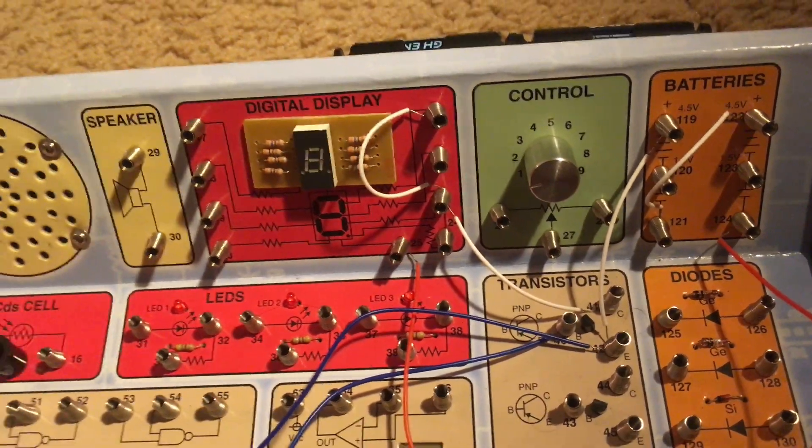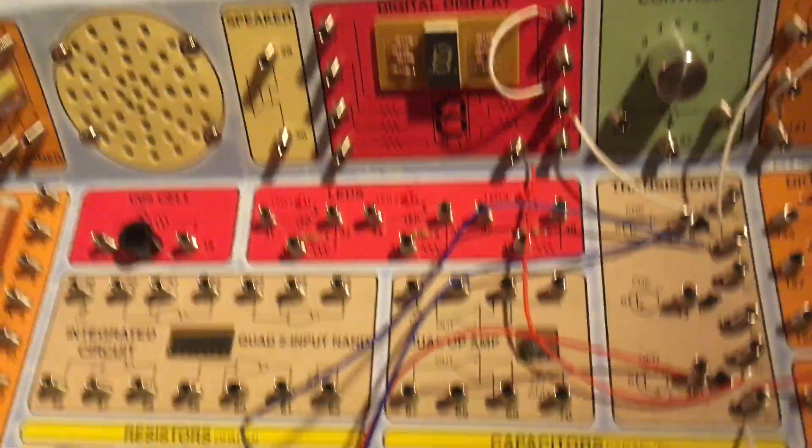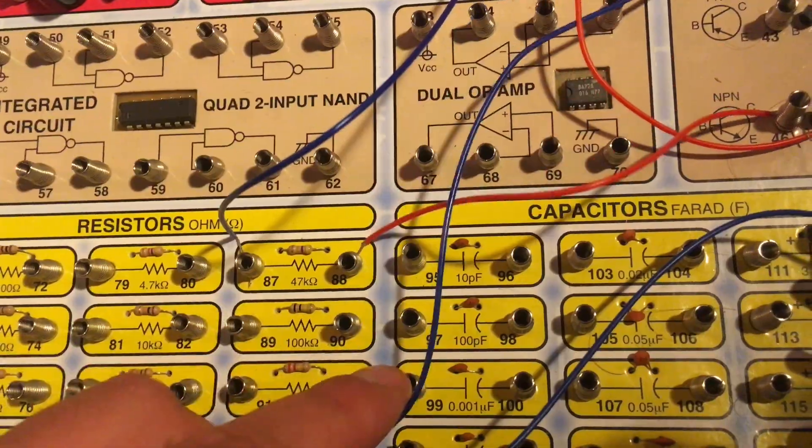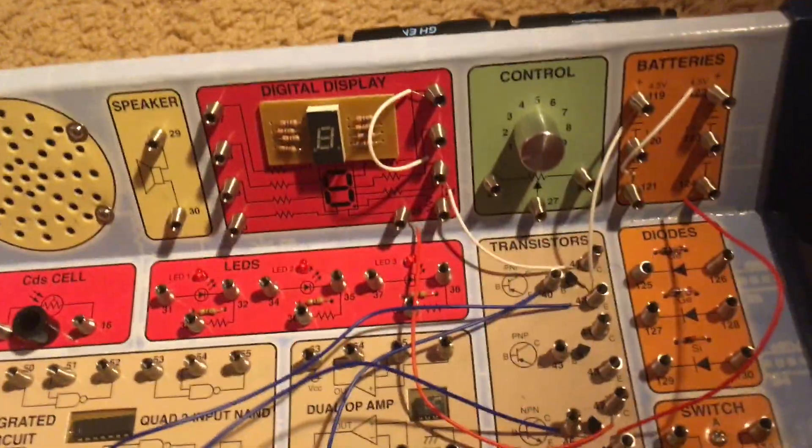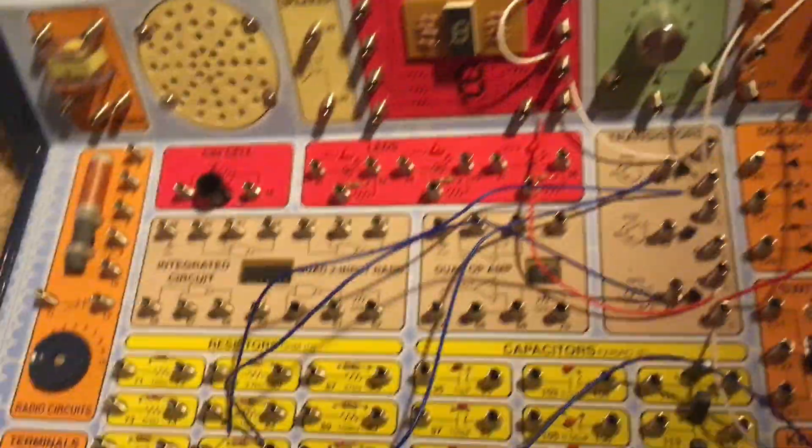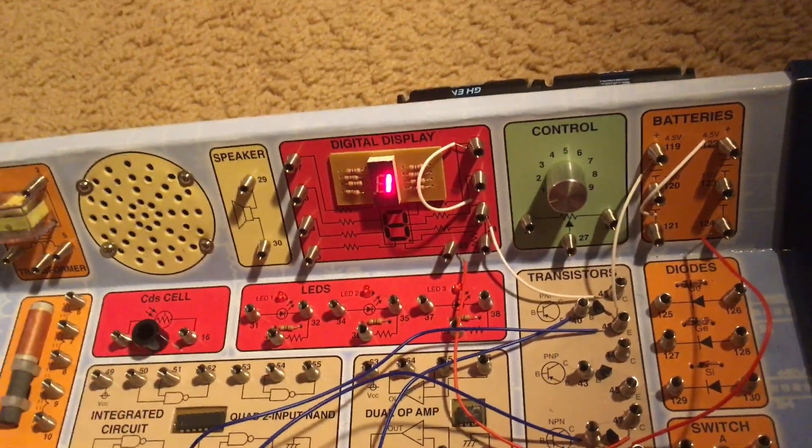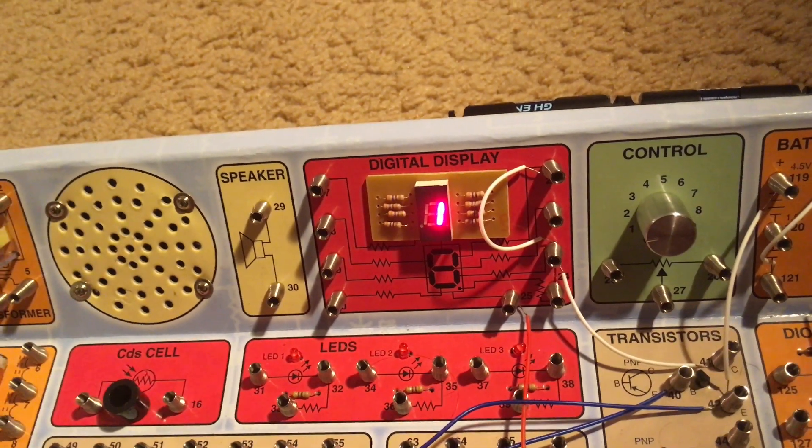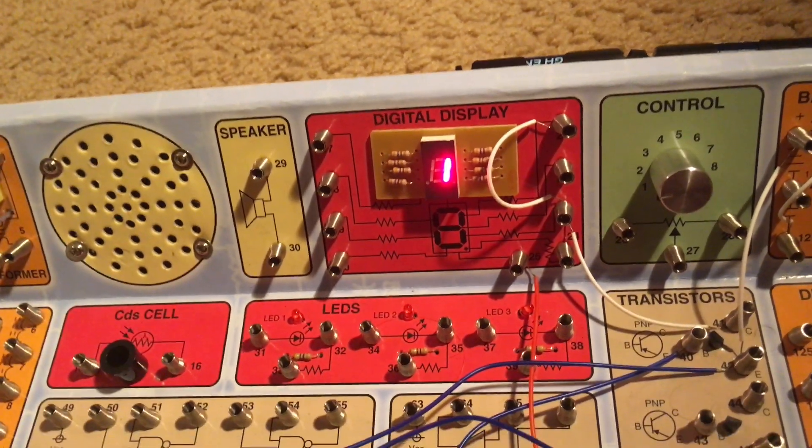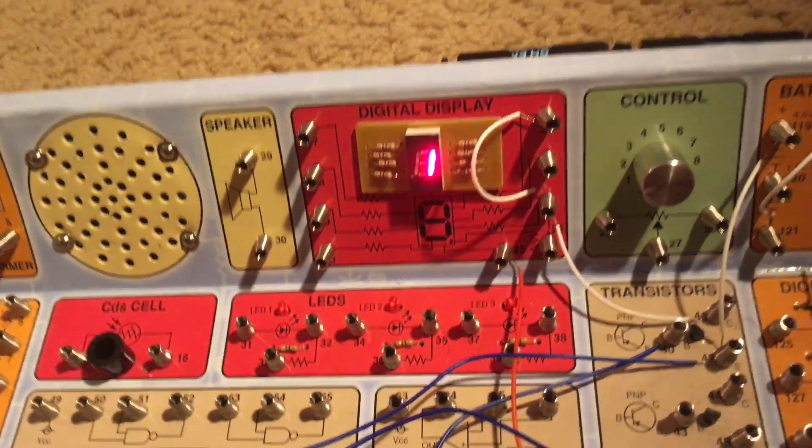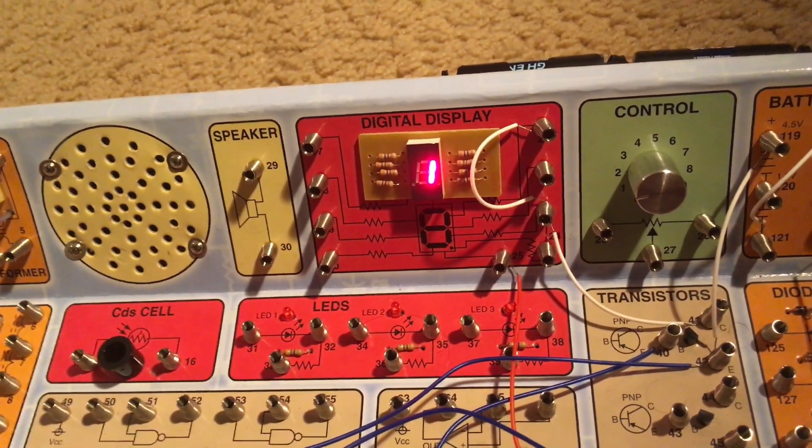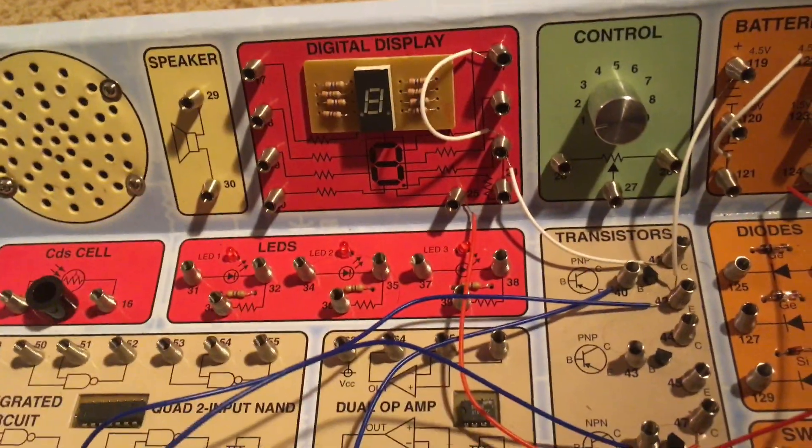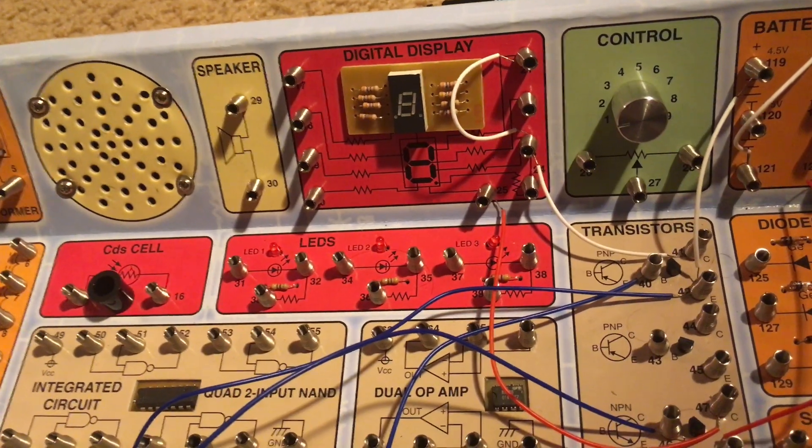Now I am going to change connections here, and now using a different transistor and a different resistor I am going to hold down the key switch again. This time it may be hard to tell, but I think the seven segment display is brighter because there is less resistance for the current.